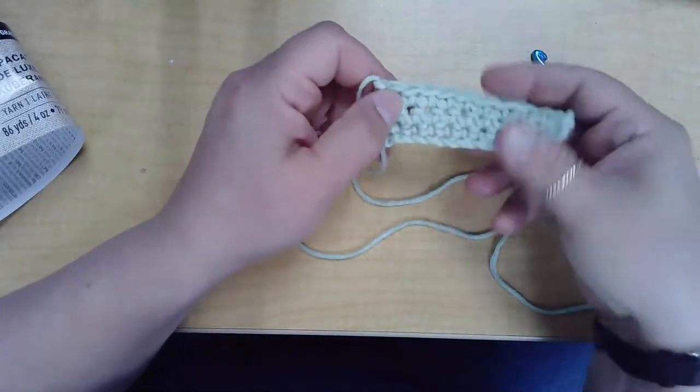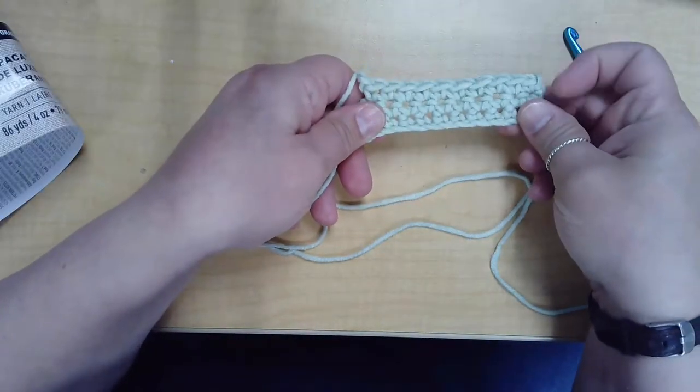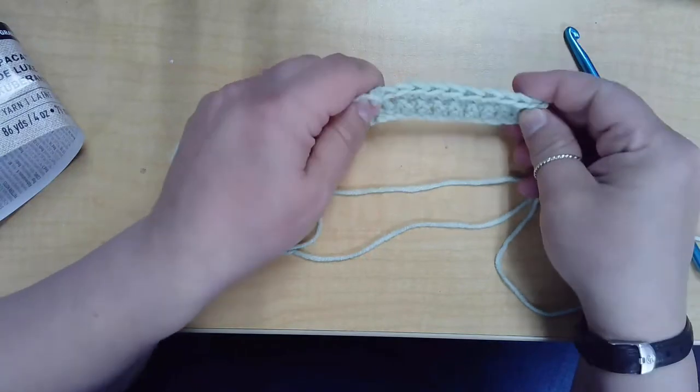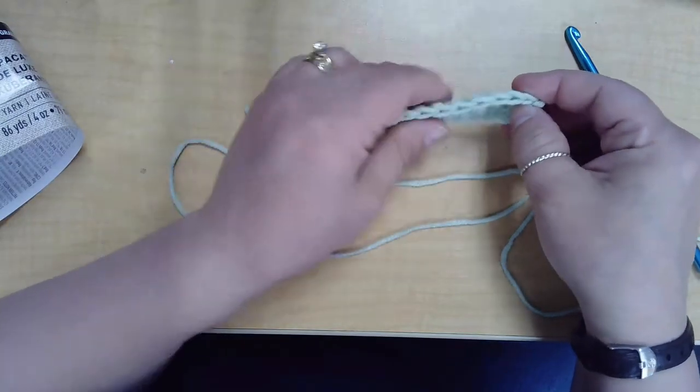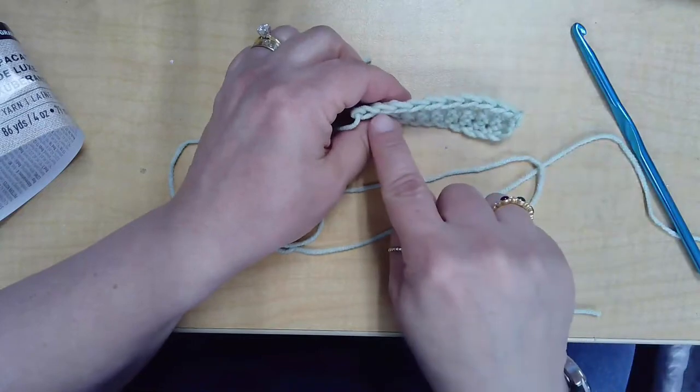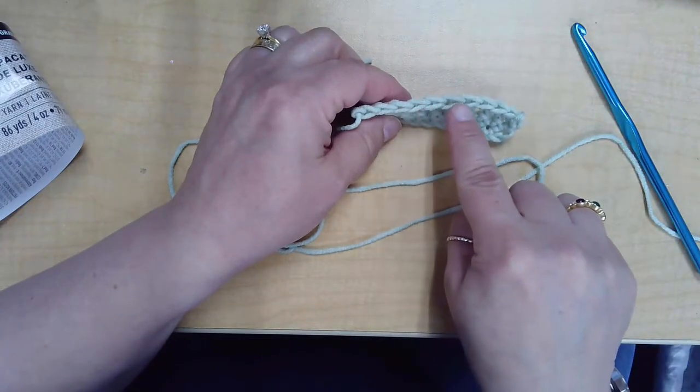All right, today we are going to show you how to do simple chaining and a single crochet stitch. You can see each stitch is marked by a V shape in this swatch right here.